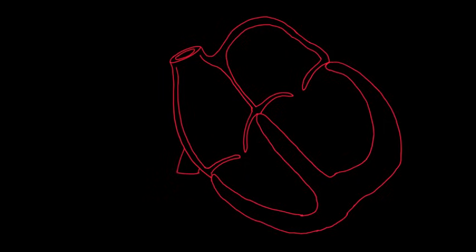Here's a diagram of the four chambers of the heart. Let's name them to get started. We've got the right atrium up here, the right ventricle down here, the left atrium and the left ventricle. So these are the four chambers, and blood is going to flow through all of them and then get out to the body.